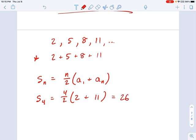Well, is this true? 2 plus 5 is 7, plus 8 is 15, plus 11 is 26. Yay, we proved math. So this is the important formula for the day.